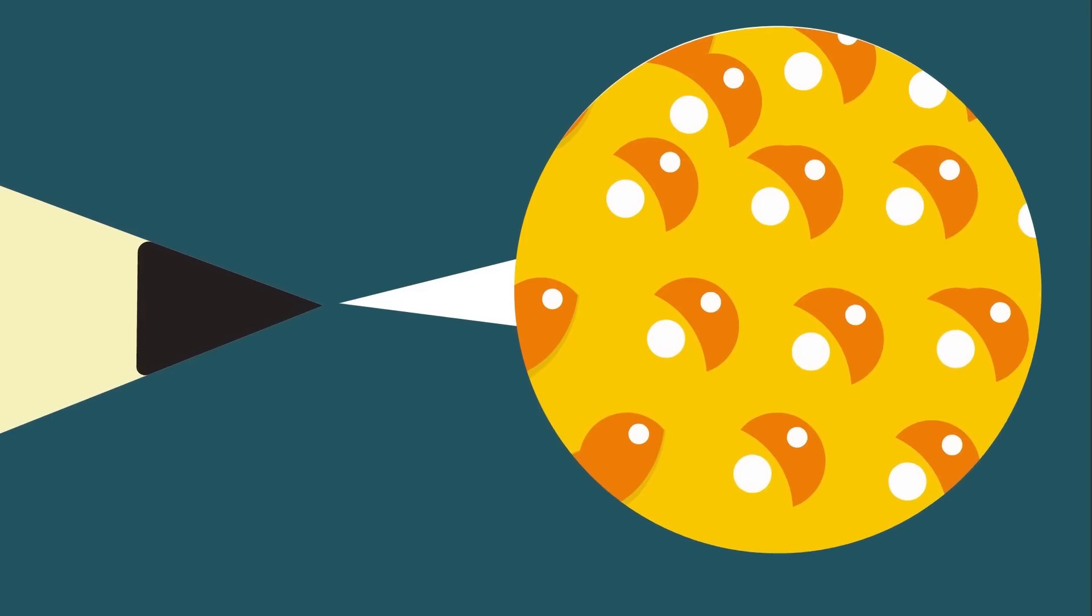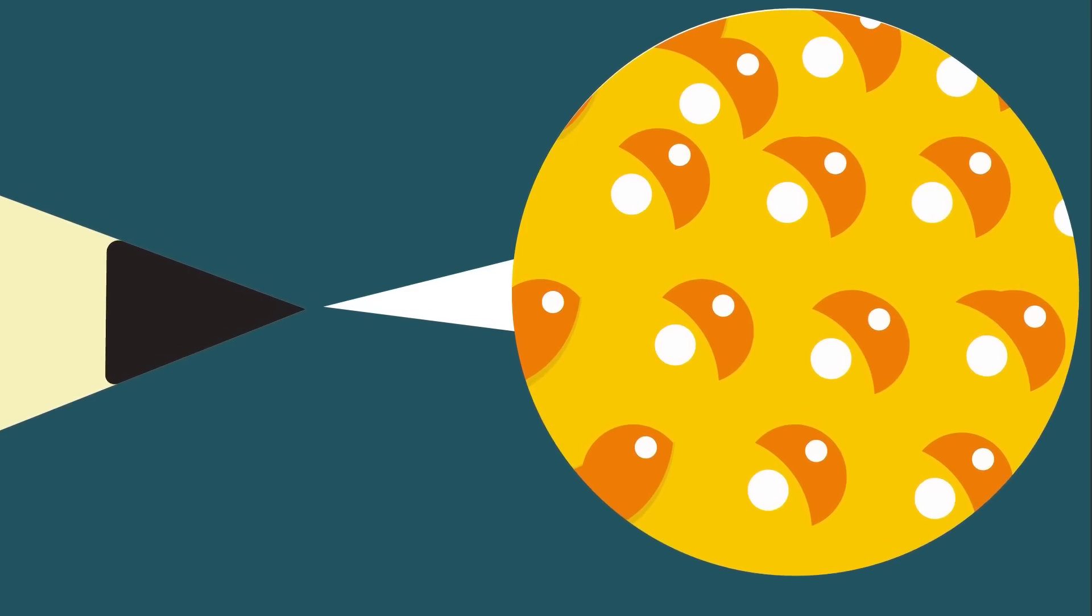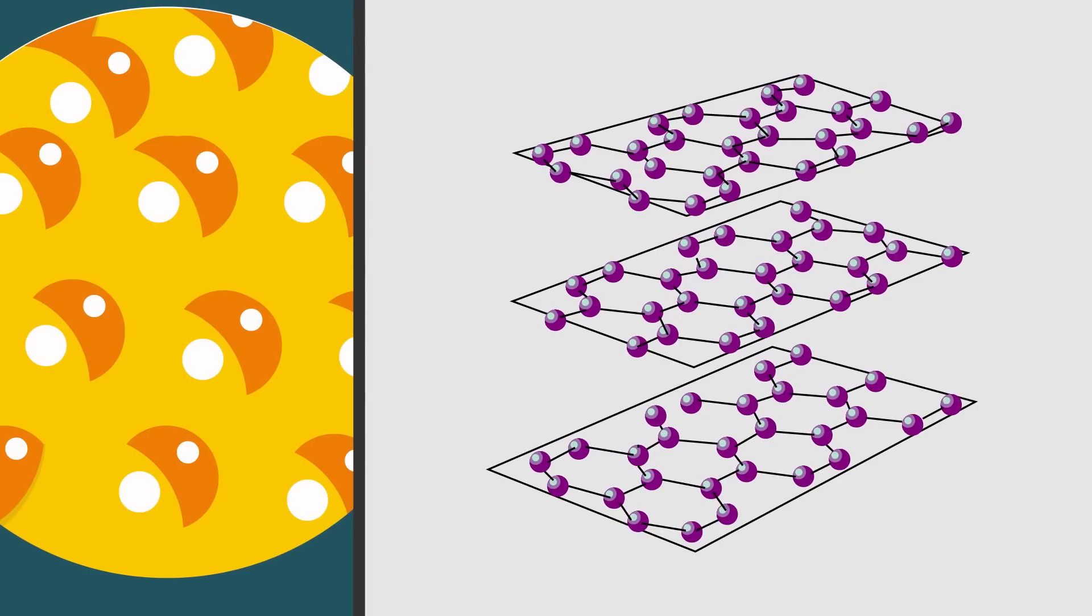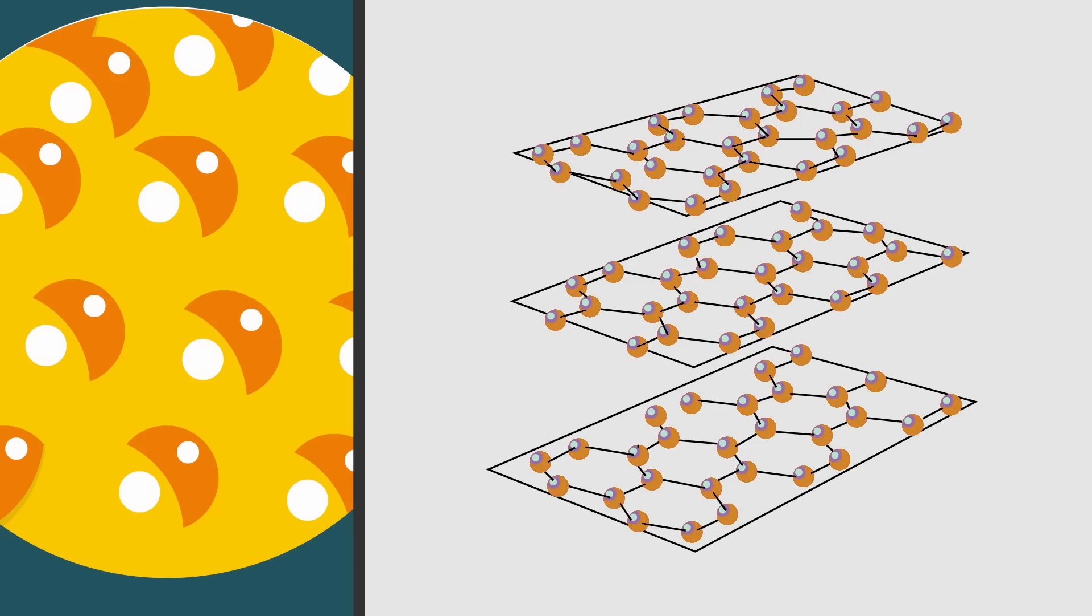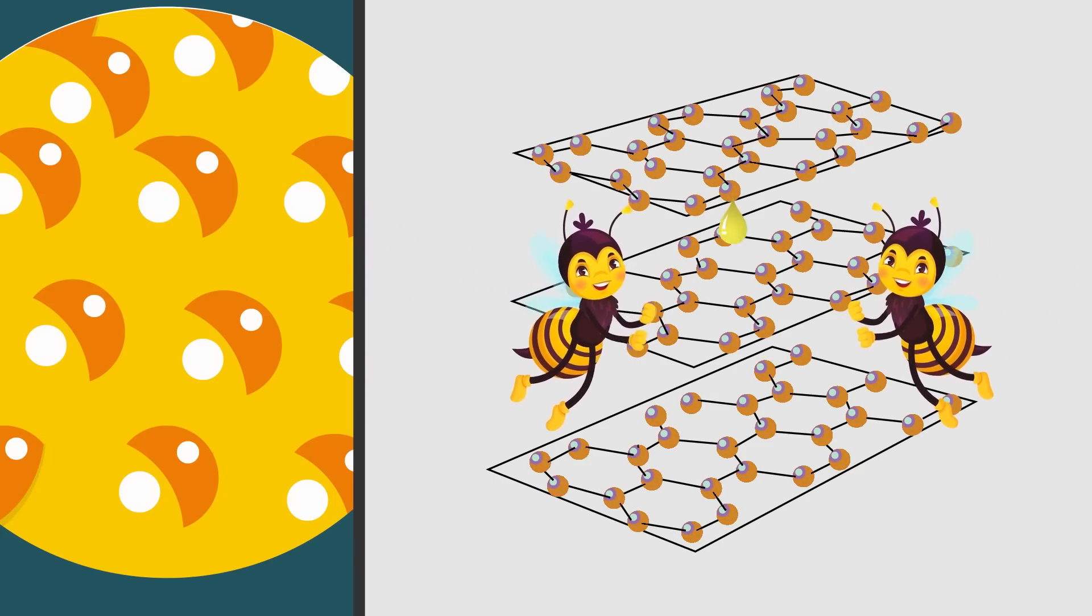To form graphite, you have to have layers of a substance called graphene stacked on top of each other. Graphene is a single layer of carbon atoms bound together that looks much like a hexagonal honeycomb lattice. You've all seen honeycomb, we guess, and this is what it looks like.